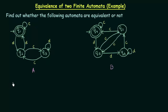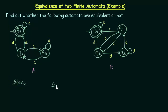Let us check that condition by making a table. Here I will have the pairs of states. If you see in this automaton, the inputs are C and D — C and D are the input symbols that we have.